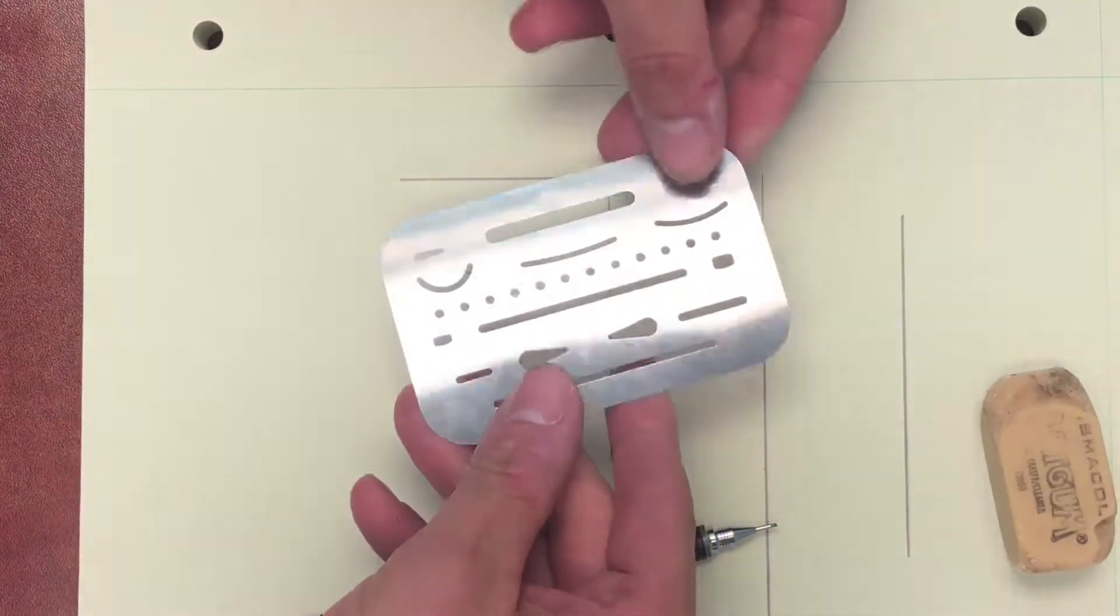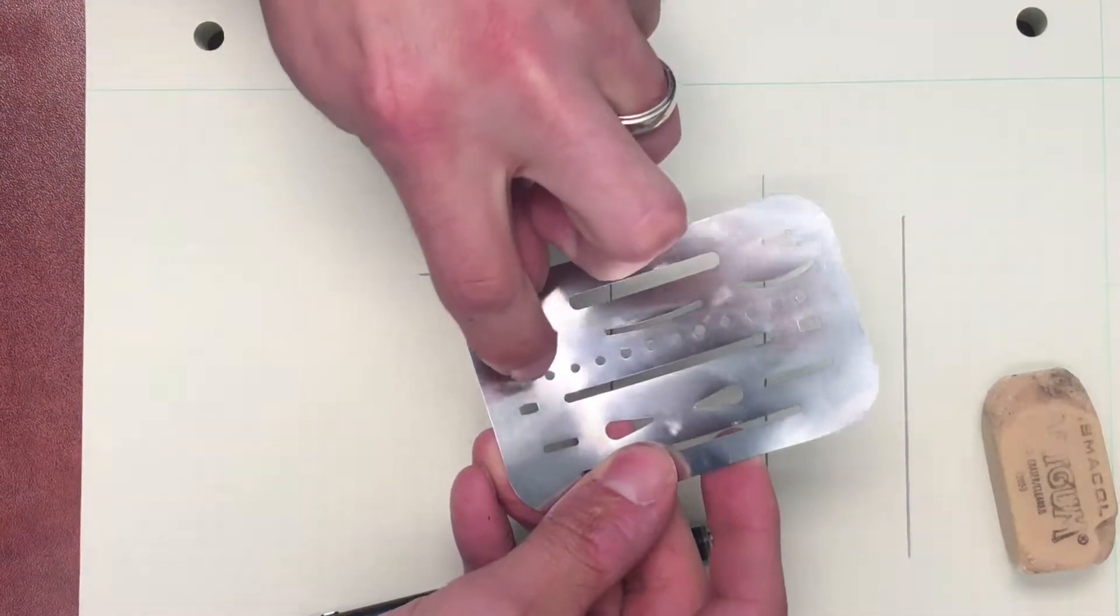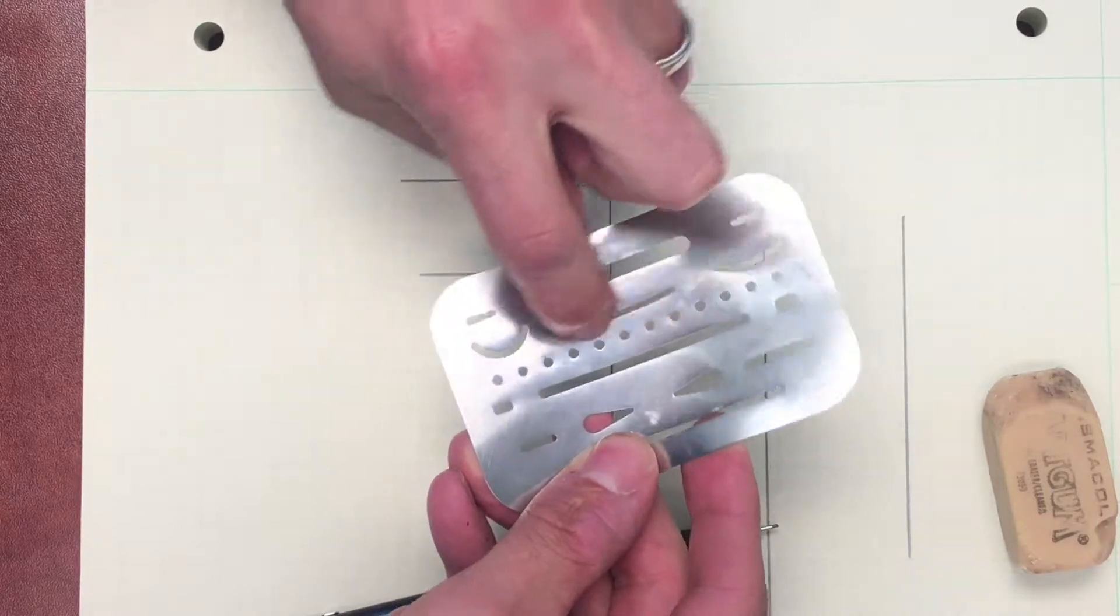One of the other magical tricks about the eraser guard is these dots that go across here are there to make hidden lines.